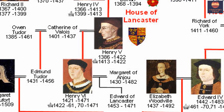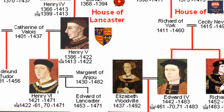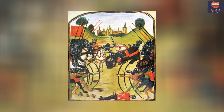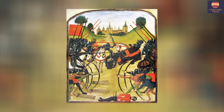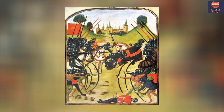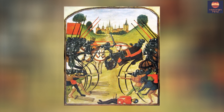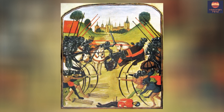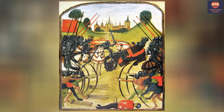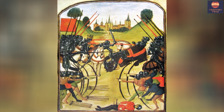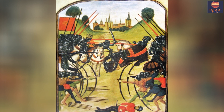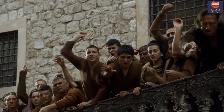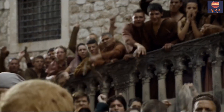A dispute arose between Edward IV and his advisor the Kingmaker, so they decided to revoke King Edward IV and return the throne to King Henry VI. But King Edward defeated him at the Battle of Barnet, which led to the killing of Warwick the Kingmaker in 1471. In May of the same year, the Battle of Tewkesbury took place, in which the commander of the Lancaster army was executed.